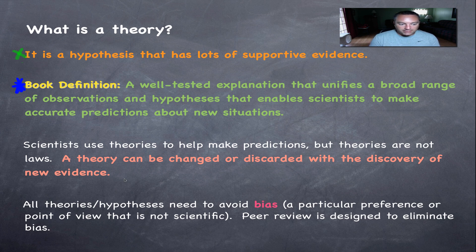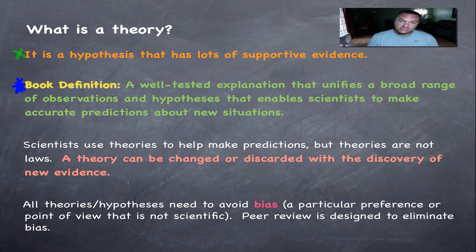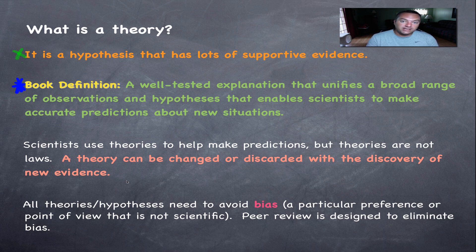A theory is extremely important to scientists because they use theories to make predictions. For example, with global climate change occurring in our world, there are lots and lots of theories on how, why, and when that's going to occur. Scientists are using these theories to predict what's going to happen in the future. Hopefully all of these hypotheses have a ton of data to back them up so that they become a theory and can give us an accurate prediction — and when it comes to global warming, some of those predictions are just not that pretty.